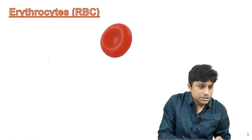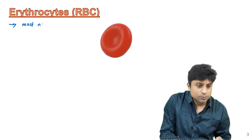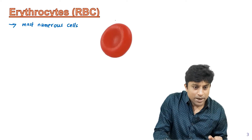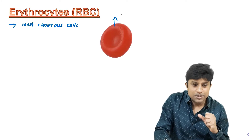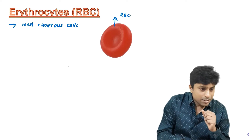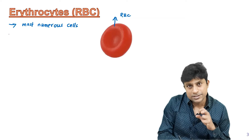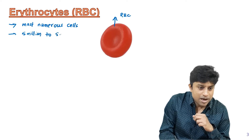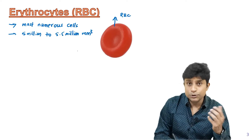RBC or erythrocytes are the most numerous cells of the blood. As you can see in the diagram, RBC are biconcave and disc-shaped, and they are enucleated cells — RBC do not have a nucleus. The number of RBC is almost 5 million to 5.5 million per cubic millimeter of blood.